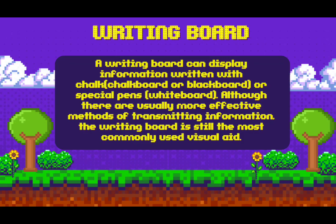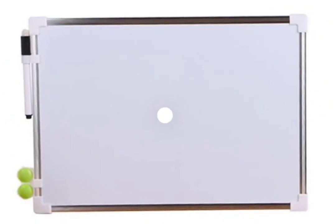My name is Catherine Replaza and I am going to continue to discuss the instructional materials. A writing board can display information written with chalk on a chalkboard or blackboard, or with special pens on a whiteboard. Although there are usually more effective methods of transmitting information, the writing board is still the most commonly used visual aid. Text and drawings should be large enough to be seen from the back of the room, especially for students who have difficulty seeing.